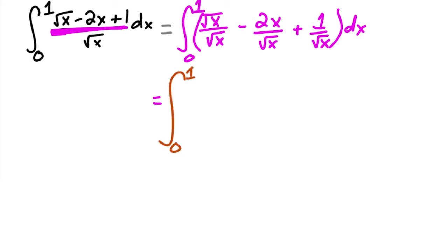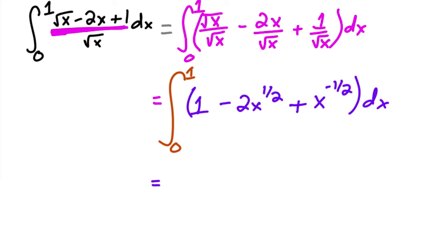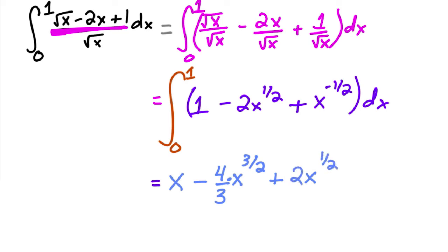For example, the first fraction: square root of x over square root of x is just one. Then minus two x over root of x is two x to the one half. And then plus x to the negative one half, bringing that denominator upstairs. So the antiderivative is x, minus four thirds x to the three halves — since there's already a two — plus two x to the one half.